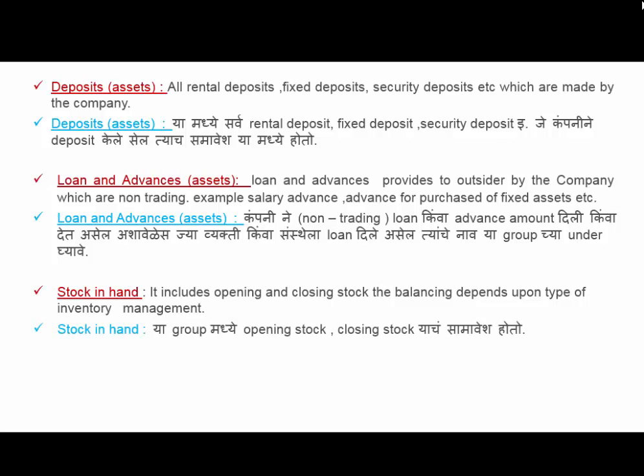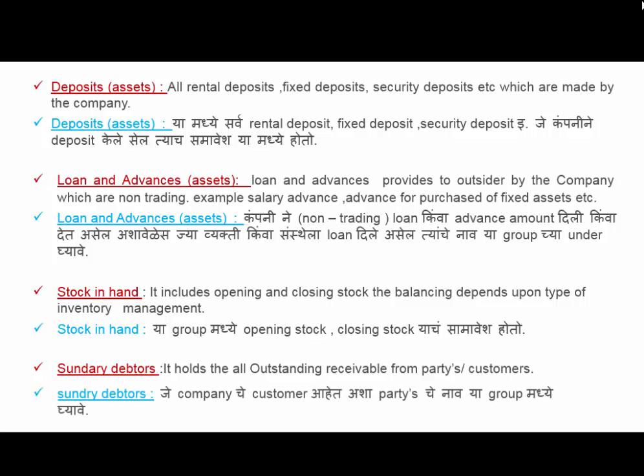Next is Sundry Debtors. It holds all outstanding receivables from parties or customers. All customers are included under this group — the firms, organizations, or party names to whom we sold goods are included in the Sundry Debtors group.